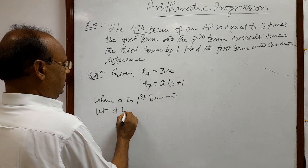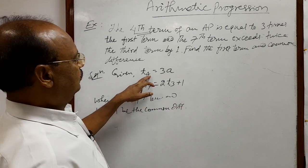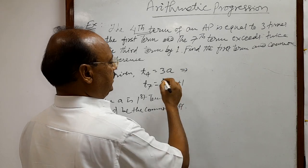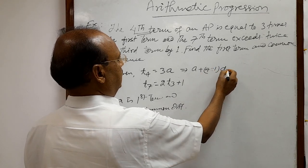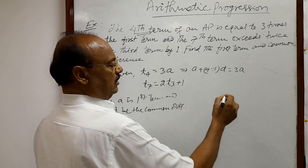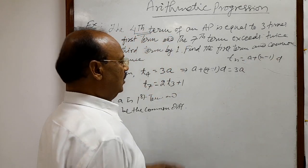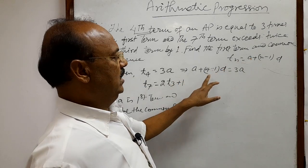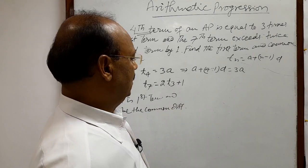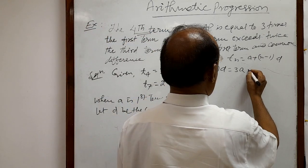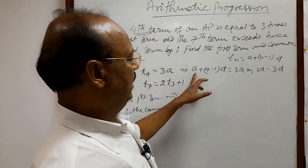From the condition t4 = 3a, we can write t4 = a + (4 − 1)d = 3a. Here we are using the general term formula: tn = a + (n − 1)d. So by this formula, t4 = a + 3d = 3a.